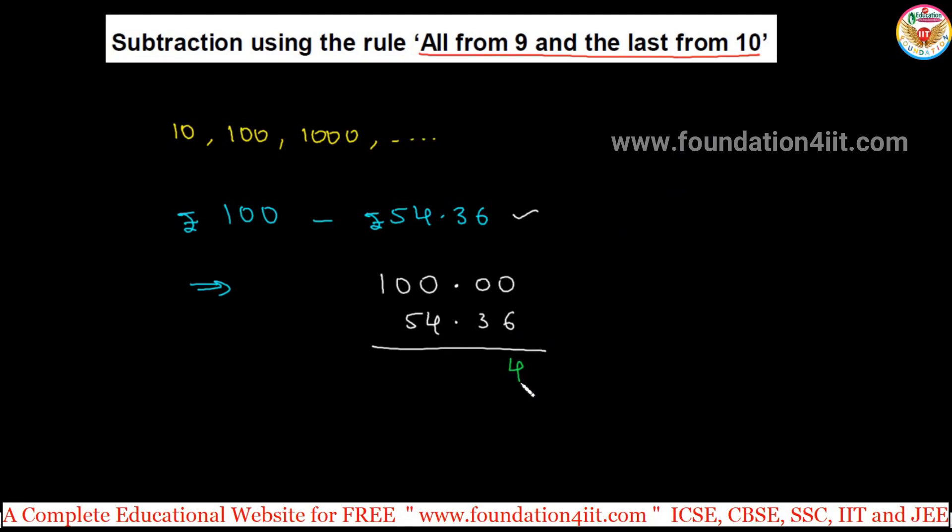And remaining all, that is only from the 9. So 3 - 9 minus 3, just you can take 6. Point, 9 minus 4 is 5, 9 minus 5 is 4. Simple - 45.64. So this much amount you should get back.